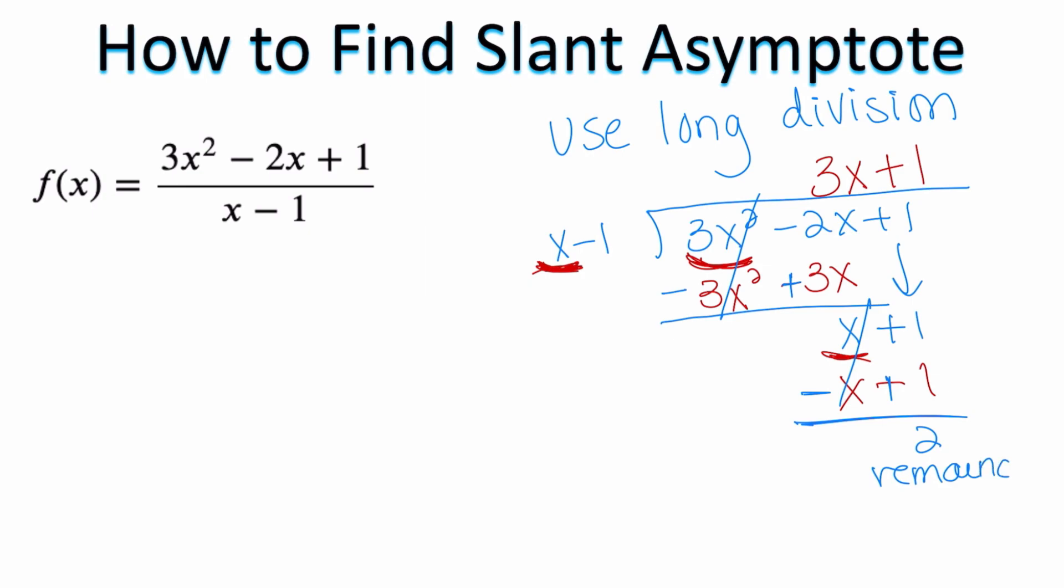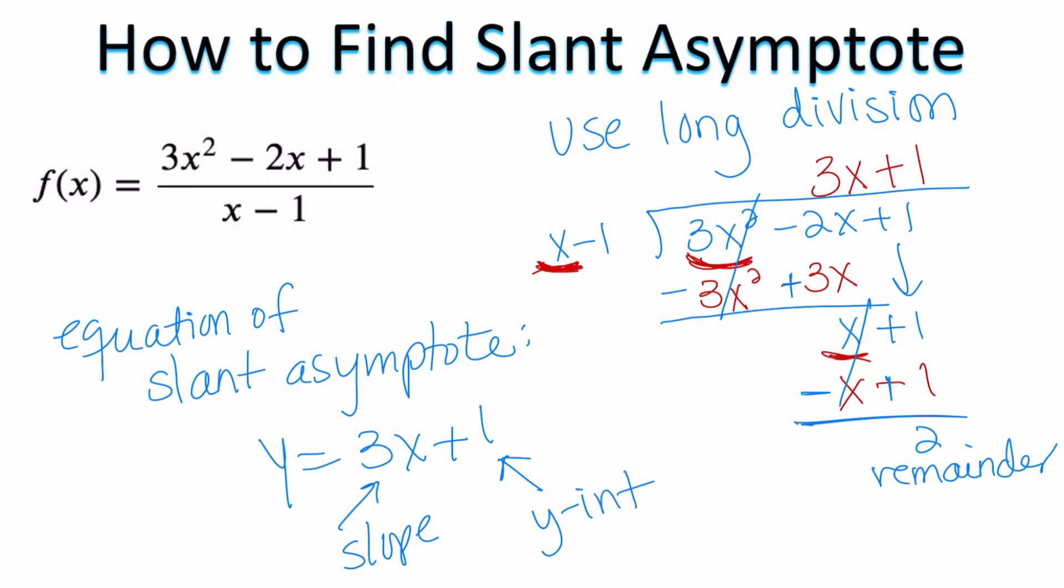But right now for this problem I don't really care what the remainder is. So what I was able to find is the equation for the slant asymptote, and the equation is y = 3x + 1, where m is the slope 3 over 1, and 1 is going to be the y-intercept.